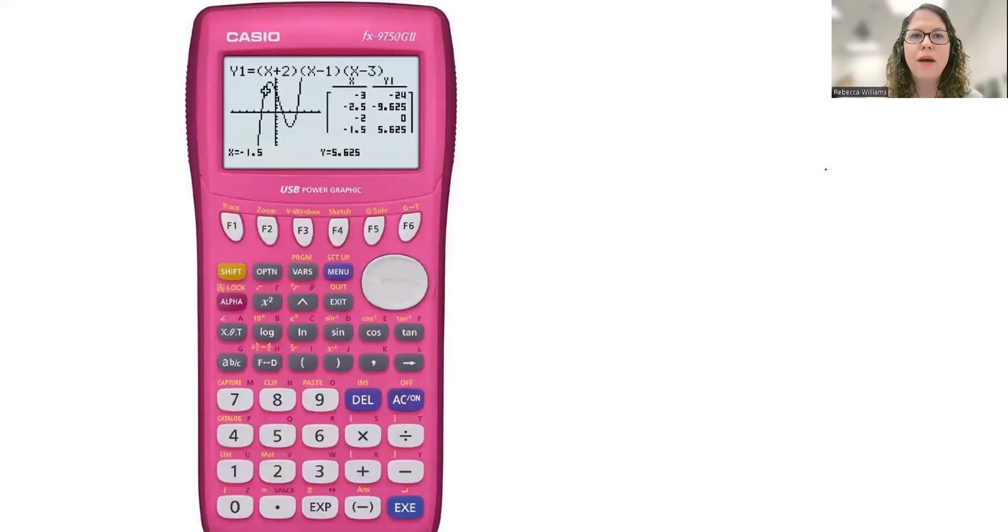This is going to be the Casio graphing calculator. And they don't have an EE function, but they do have this exponential button right here that does the exact same thing for you.